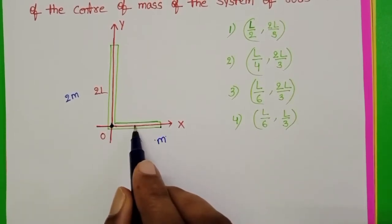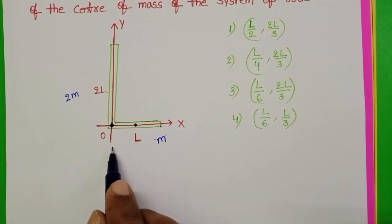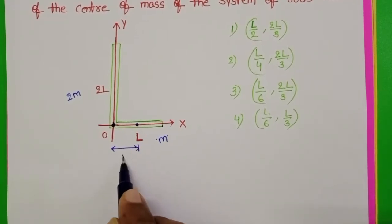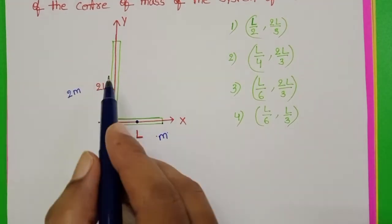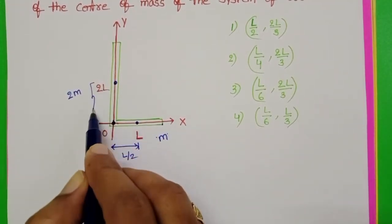Center of mass of the first rod is located at the center of the rod. This distance from origin is L by 2. The center of mass of the second rod is at a distance of L from the origin.